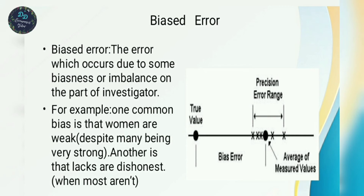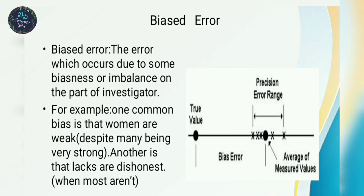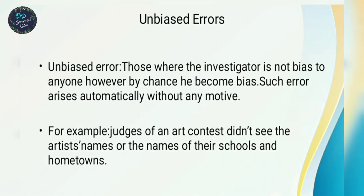One example of biased error is a common statement such as 'women are very weak.' Another example would be statements like 'black workers are dishonest' or 'white workers are dishonest.' These reflect bias on the part of the investigator and are examples of biased error.